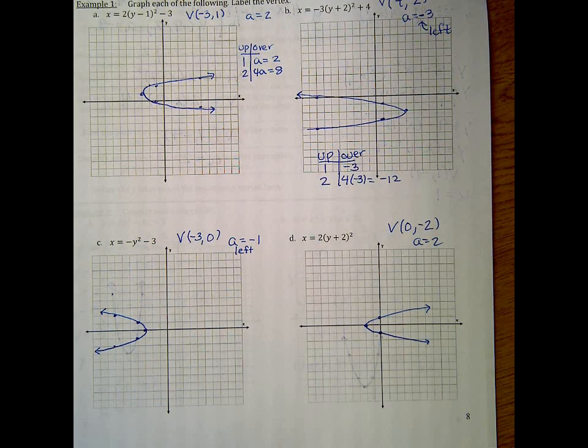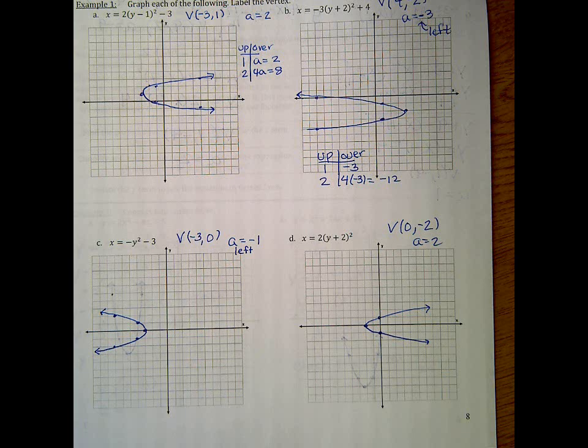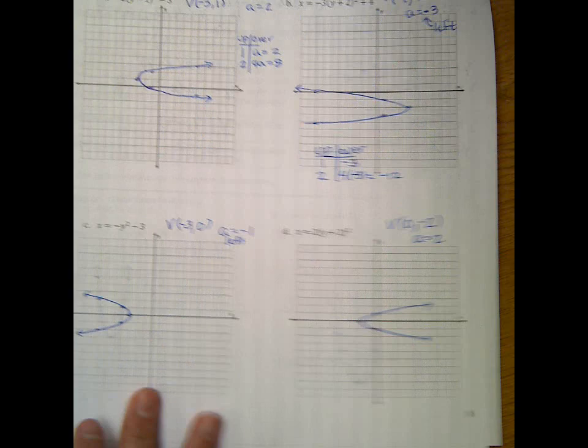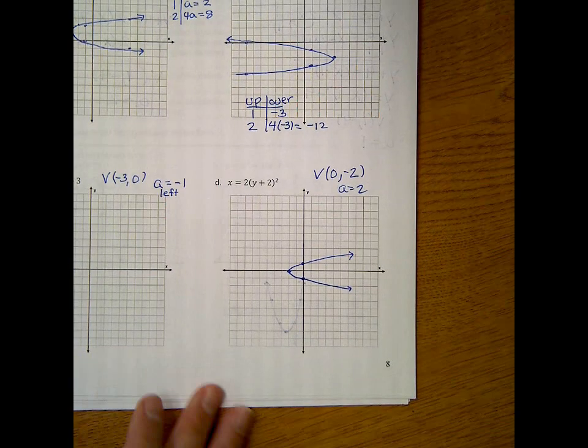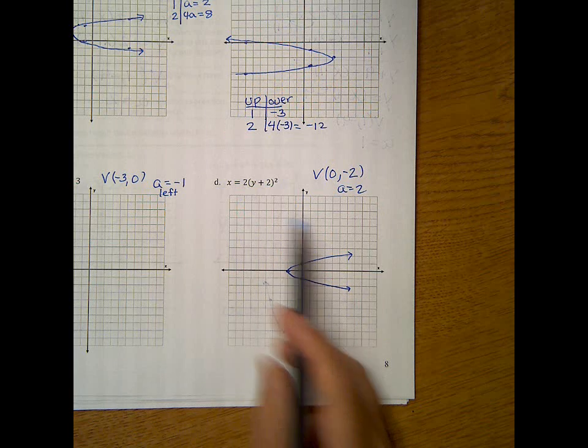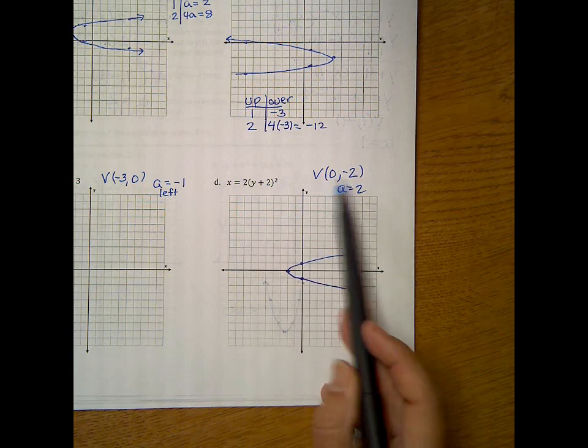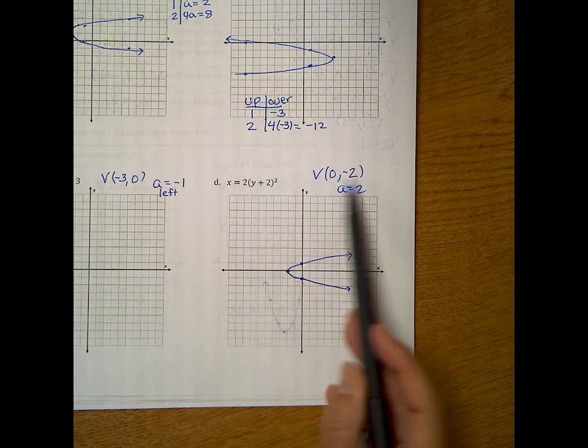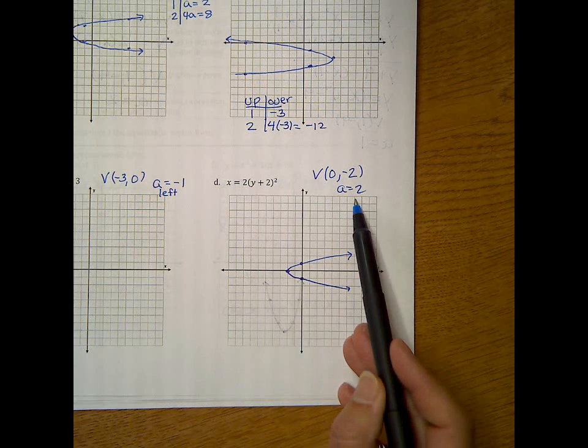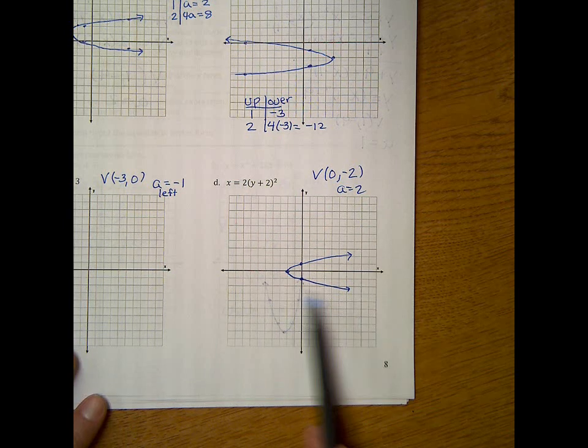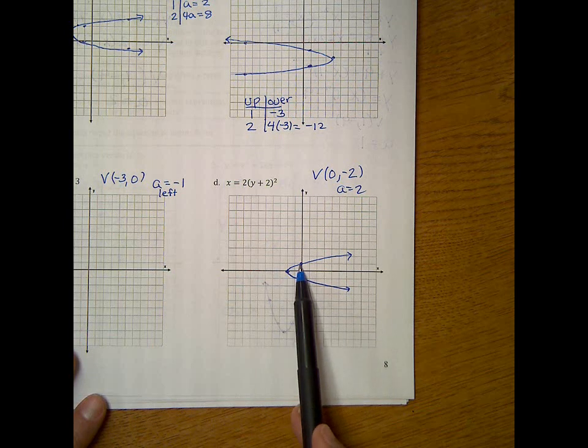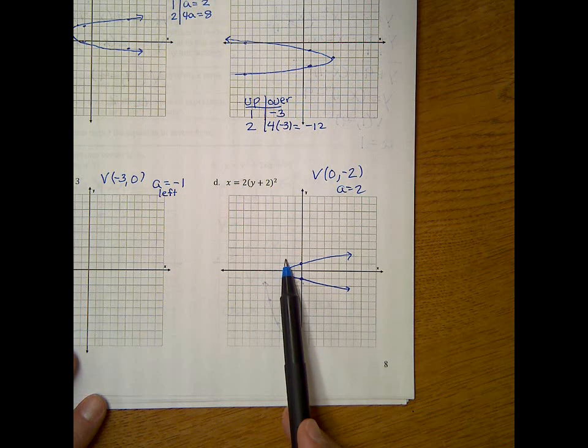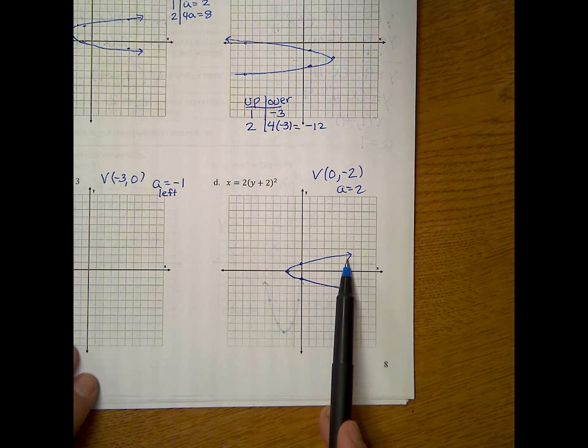Hello, this is section 2.3, combined quadratics. This is part 2. So I asked you to do this one on your own. Problem D, the vertex ended up being 0, negative 2. Make sure the y was what was with y, and the a value is 2. So it opens to the right, up 1 over 2, up 2 over 8. Okay, so let's flip on over.